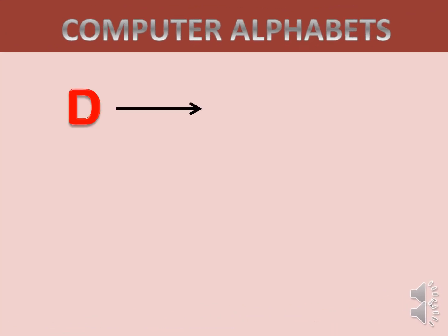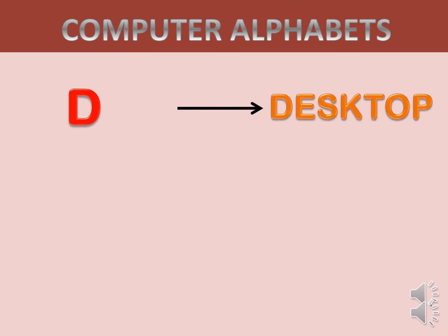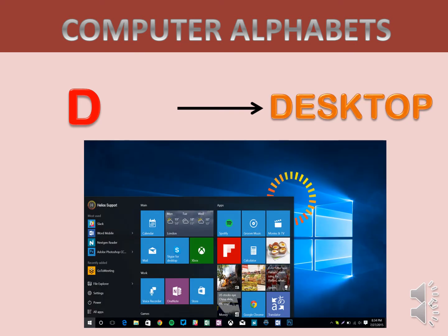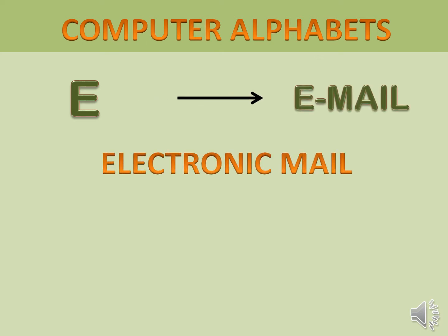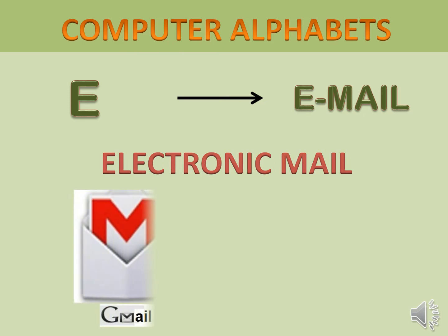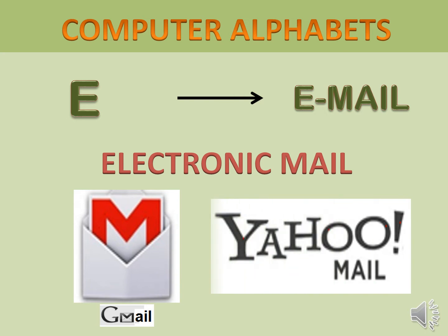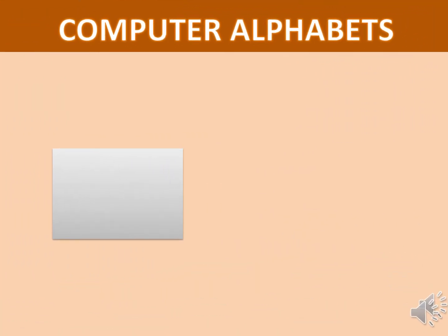D — Desktop. E — Email, Electronic Mail. F — Folder.